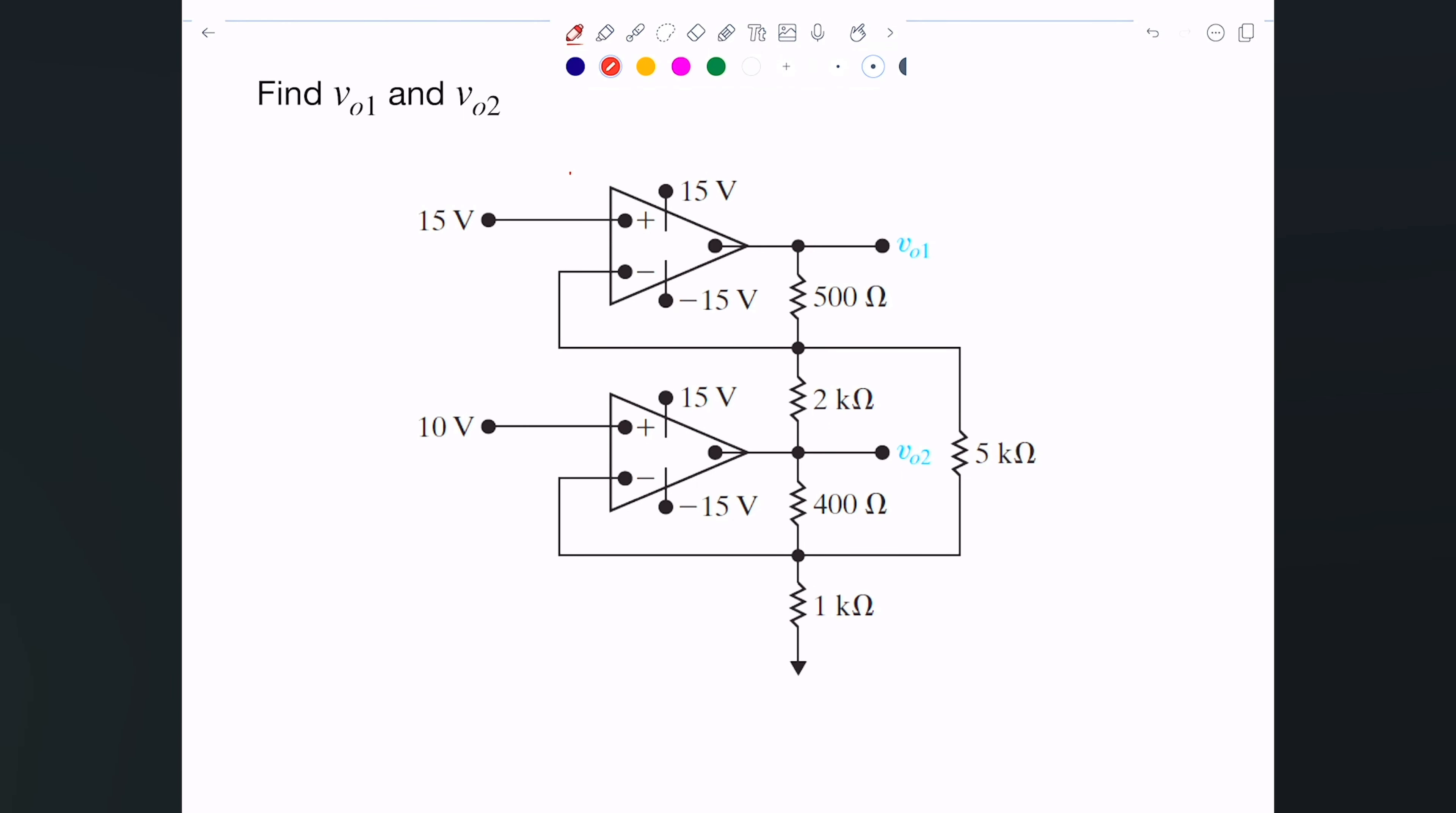In this example, we are given a couple of amplifiers A1 and A2, and we're being asked to compute the output in each one of them, which is V output 1 and V output 2.